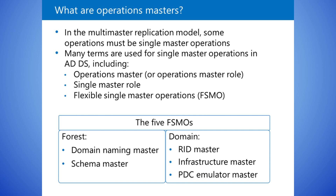The Infrastructure Master maintains inter-domain object references, such as when a group in one domain contains a member from another domain. In this situation, the Infrastructure Master is responsible for maintaining the integrity of this reference. For example, when you look at the Security tab of an object, the system looks up the listed SIDs and translates them into names. In a multiple domain forest, the Infrastructure Master looks up SIDs from other domains. If the Infrastructure Master is unavailable, domain controllers that are not global catalogs will not be able to check universal group memberships or authenticate users.